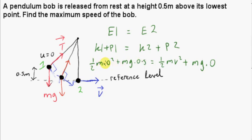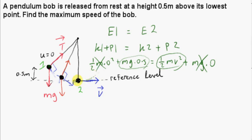The energy is entirely potential when the bob is at position 1, and that energy gets totally converted into kinetic energy at position 2. As the bob continues its upward motion, the kinetic energy gets converted back into potential energy. The m's cancel, so the result is independent of mass. Multiplying both sides by 2 gives v squared equals g times 1 (from 2 times 0.5g), and taking the square root gives 3.13 meters per second to two decimal places.